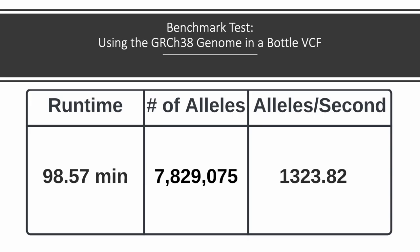To benchmark the overall speed of the VCF annotation script, we annotated the GRCh38 Genome in a Bottle VCF. This VCF contains over 7.8 million alleles, which were annotated in a little over 98 minutes, averaging approximately 1,300 alleles per second. While this is a good first pass, in the future we hope to increase the speed and efficiency of the VCF annotation script.